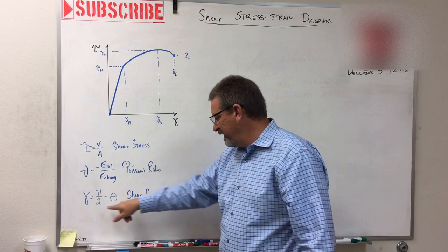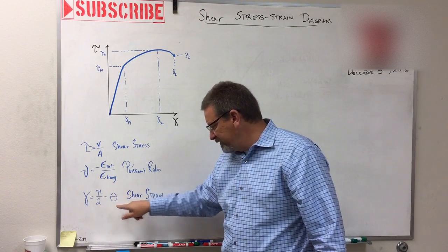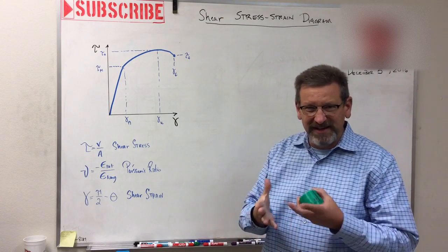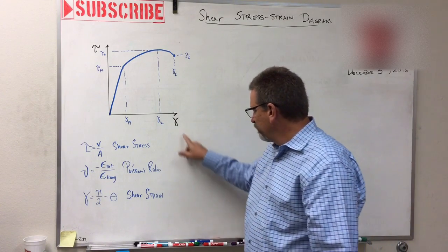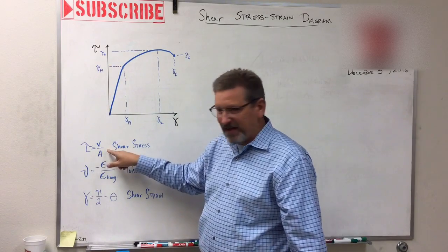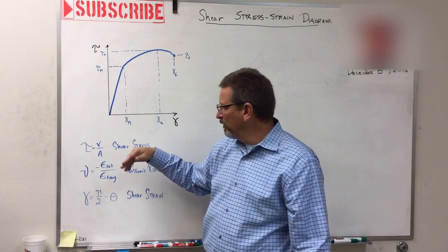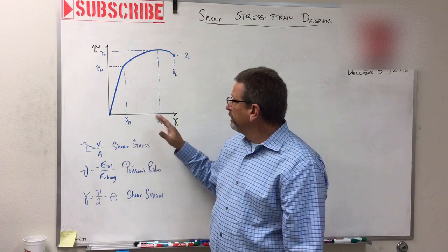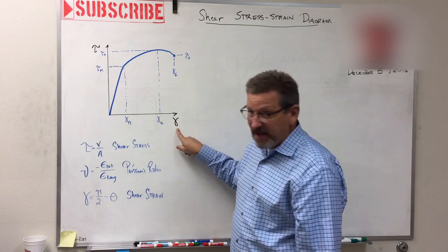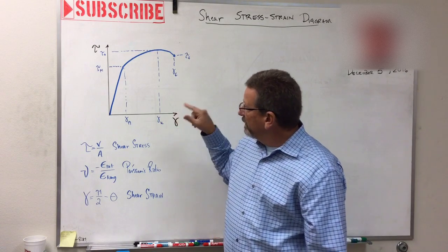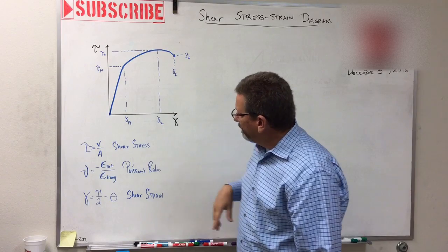And then there's shear strain, which is 90 degrees minus the new angle theta. So shear strain is an angle—in this one, it's in radians. What is tau in? Well, that's psi or megapascals. So since this doesn't have any units, it's just in radians. The units for this graph for tau are all in megapascals or psi.